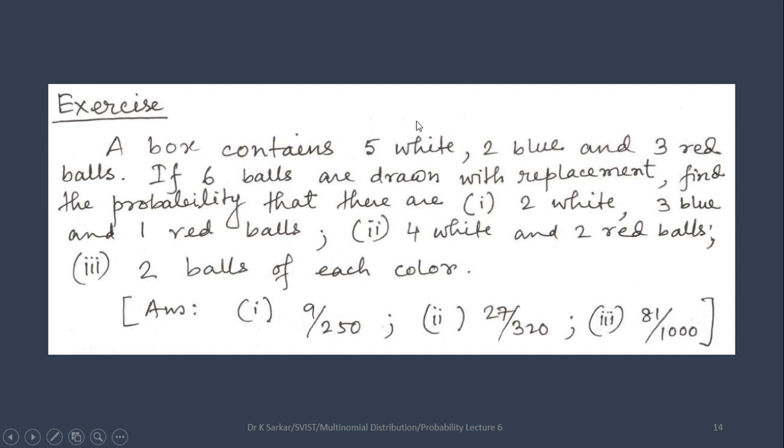There are 3 types of color: white, blue, red. In question number 1, all are mentioned. In question number 2, white and red mentioned, blue not mentioned. So you will take blue as 0. Question number 3, 2 balls of each color. So all are mentioned here.